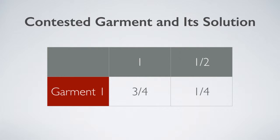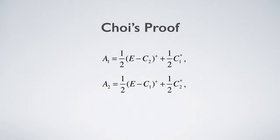Over 2,000 years, scholars around the world have been trying to explain this Talmud decision. It can be proved that the awards are the simple average of two numbers: the amount claimed by a person and the unclaimed amount by another.